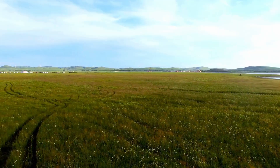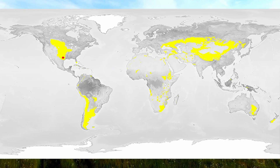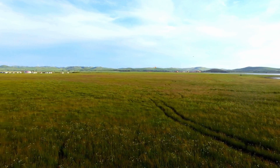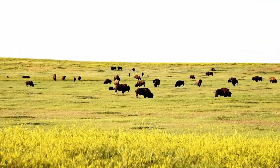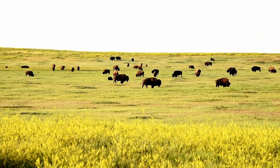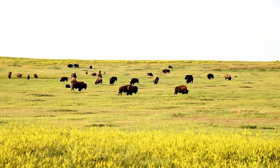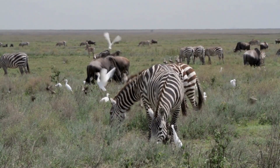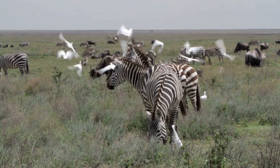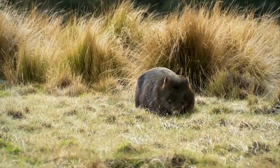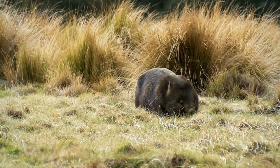Temperate grasslands are further away from the equator than savannas and receive less precipitation than the savannas do, so they don't have shrubs or trees. These include the Great Plains of North America, the Pampas of South America, the Veldt of South Africa, and the Steppes of Eurasia, and surround the deserts in Australia.